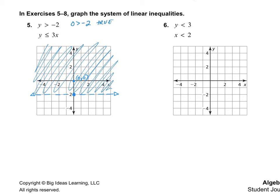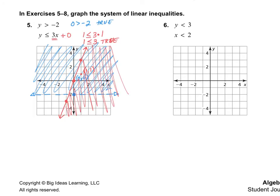Now I'm going to graph the next inequality in a different color. We have y is less than or equal to 3x plus 0 — since there's no y-intercept shown, it's 0. I'll put my point at (0, 0), and my slope is up 3 over 1. This is a solid line because it's less than or equal to. I can't plug in (0, 0) because the line crosses through it, so I'll plug in (1, 1): 1 is less than or equal to 3 times 1, which is 1 ≤ 3 — true. So I shade toward that point. My answer is the double-shaded region.